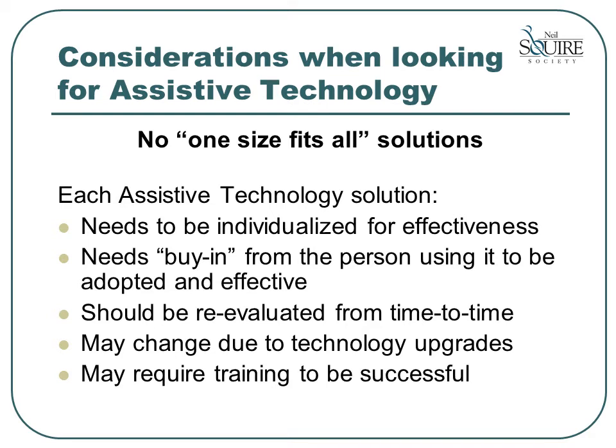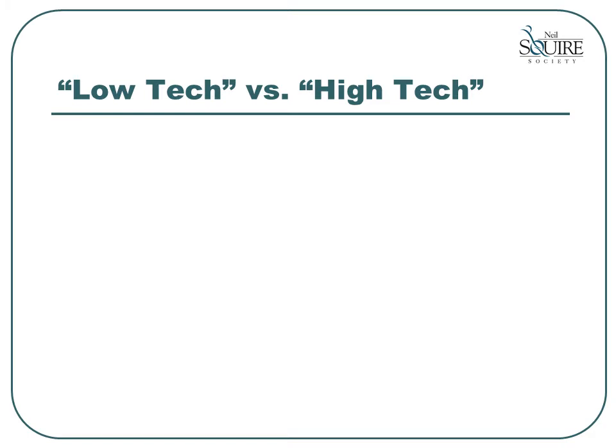Another area that we consider when making a recommendation about the most appropriate assistive technology for an individual is whether or not the item should be low-tech or high-tech. Of course, there are many items that fall between these two extremes, but let's take a quick look at the characteristics of low-tech items and high-tech items.